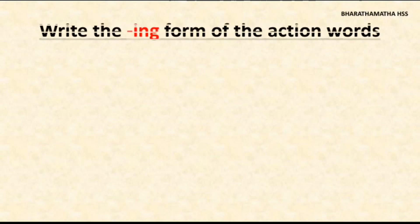Then give the heading: write the ing form of the action words. Some verbs are given. We have to write the ing form. The ing form of a verb indicates a continuous process, an action that is going on at the time of speaking.